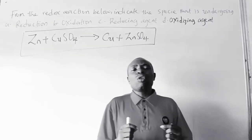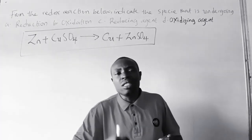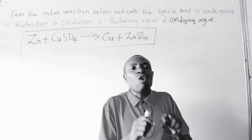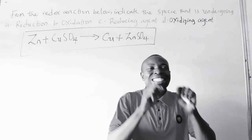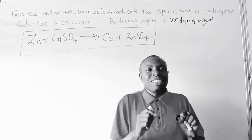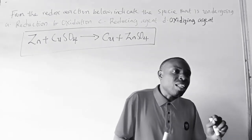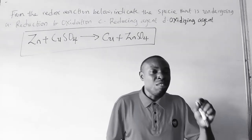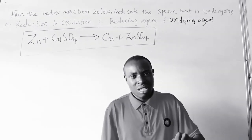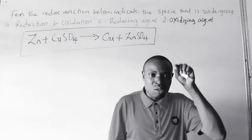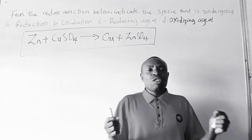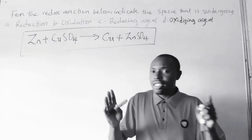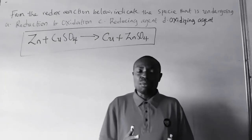Now, moving to what we call an oxidizing agent and a reducing agent. An oxidizing agent is also called an oxidant. It simply means the gain of electrons — when electrons are gained, the species is being reduced in the chemical reaction. So we can also say that an oxidizing agent is an electron acceptor. Please take note: it is an electron acceptor.